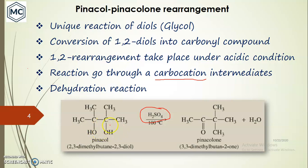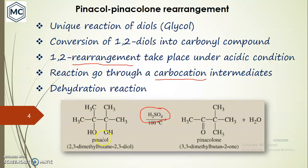It is a reaction of a 1,2-diol, and the 1,2-diol is converted into a carbonyl compound — mostly a ketone — as you can see here. During the reaction, a 1,2-rearrangement takes place under acidic conditions using an acid, and the reaction proceeds through an intermediate, which is a carbocation intermediate. It is a dehydration reaction.